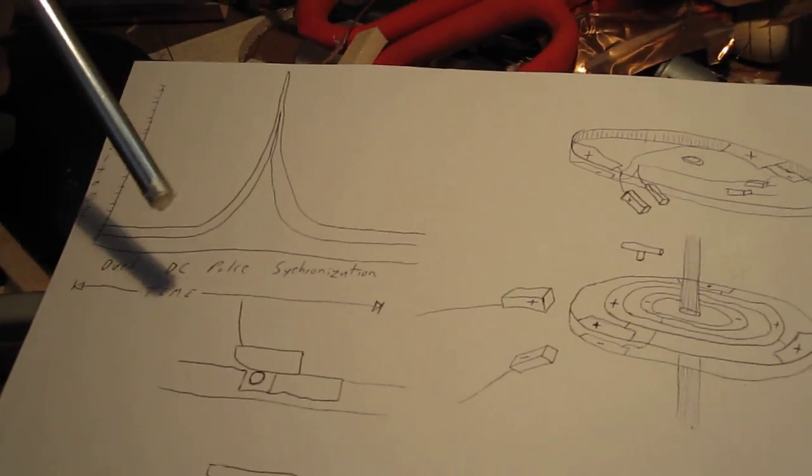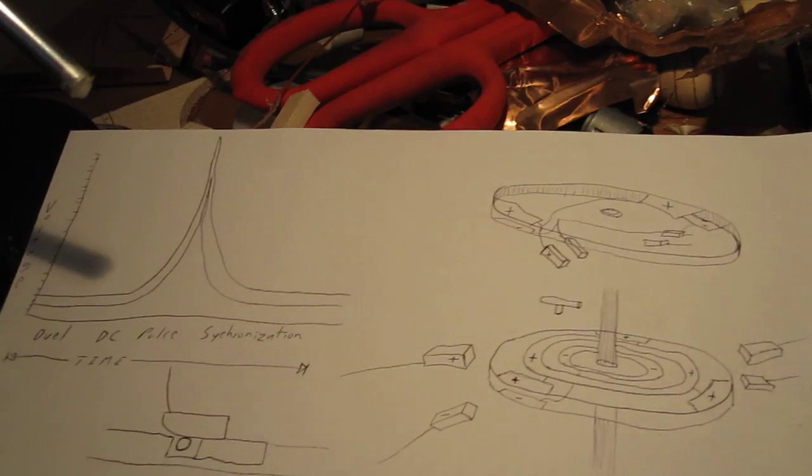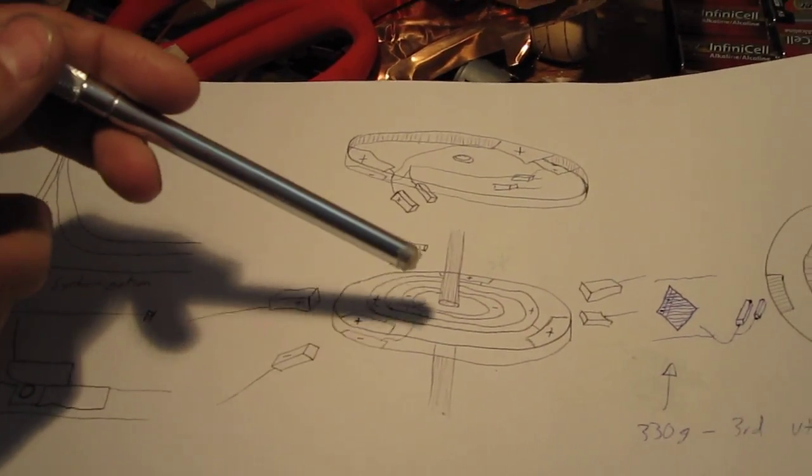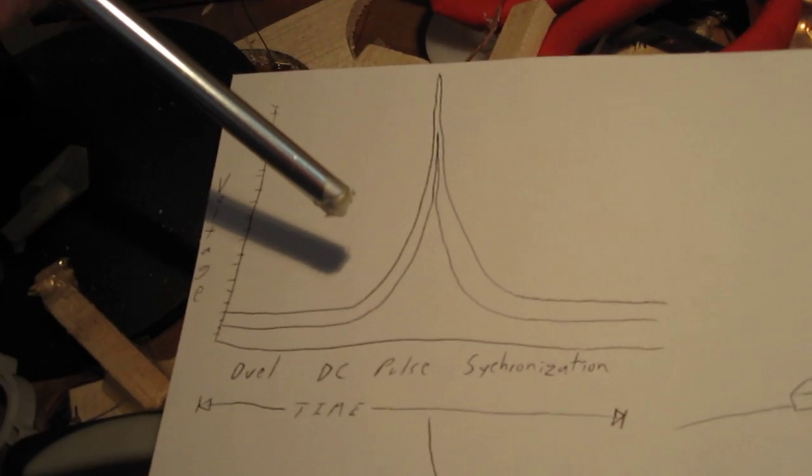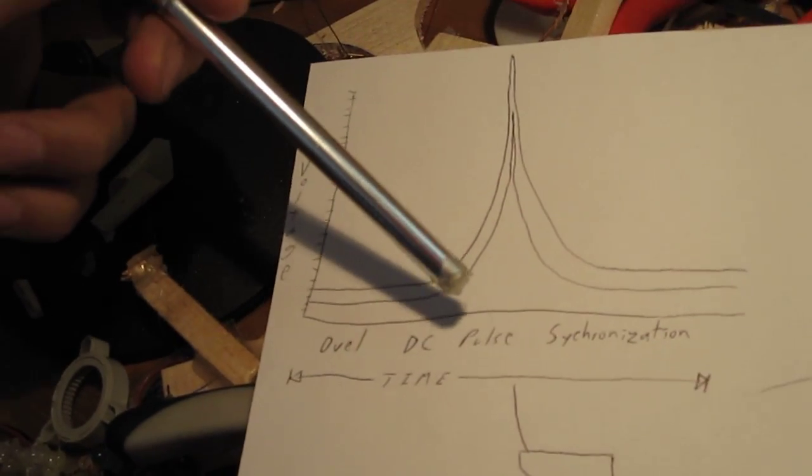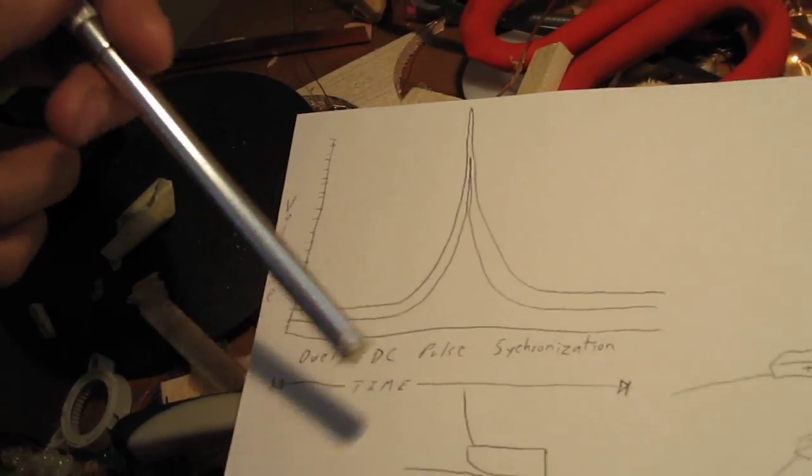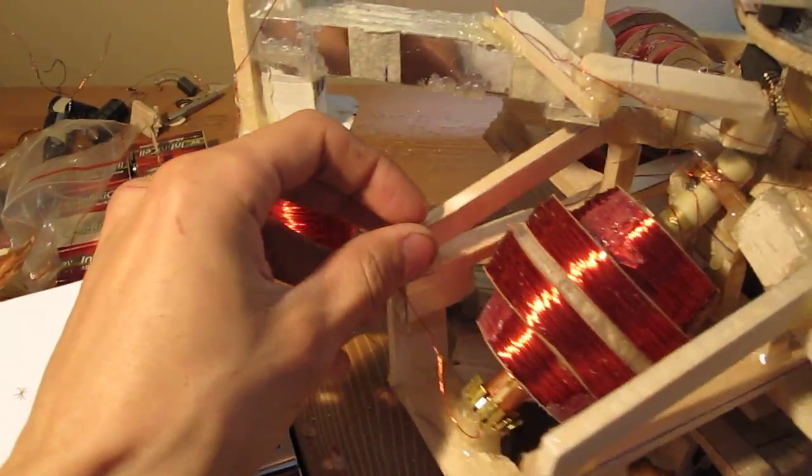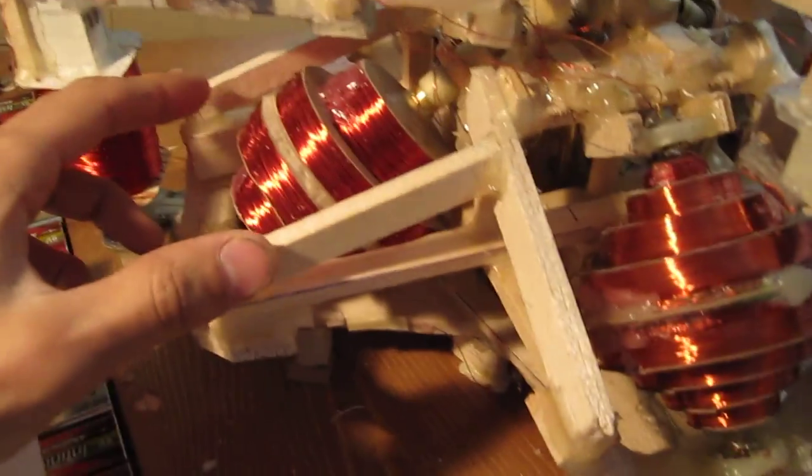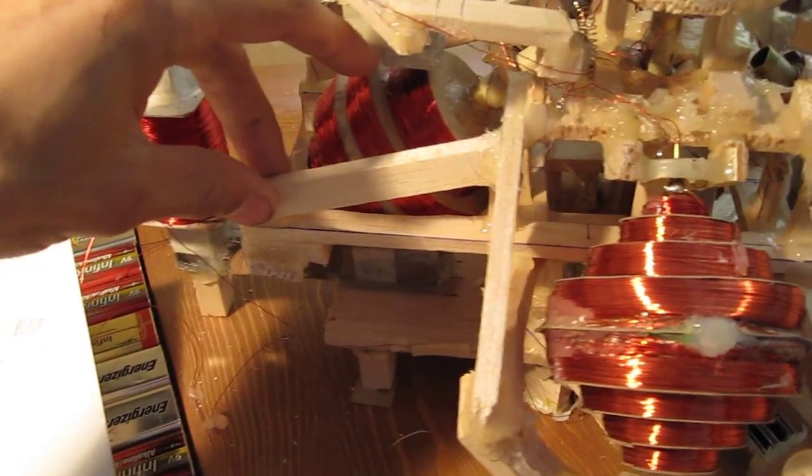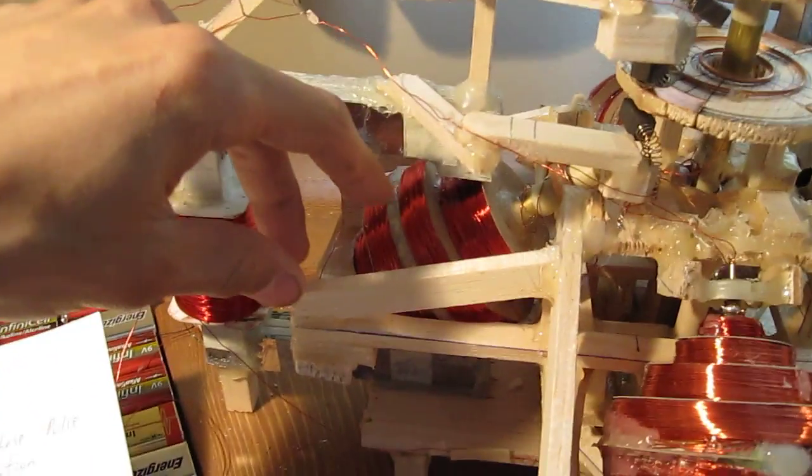Basically there's two sets, or there will be two sets of capacitors which will be synchronized perfectly by the commutator system so that there'll be a synchronous DC spike in the fields. The two coils will basically spike right when they're almost closest to each other.